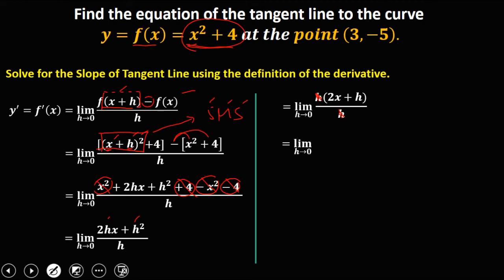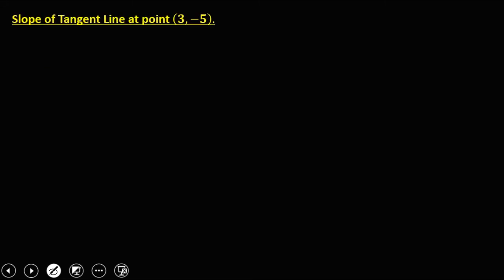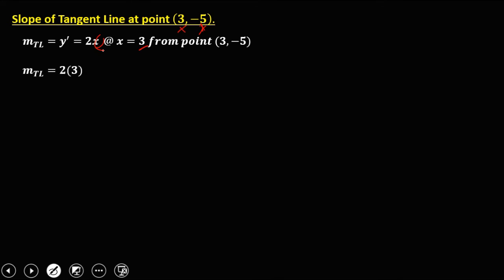Cancel the h. So the limit as h approaches 0 is 2x plus h. Now substitute 0 for h: we have 2x plus 0, so therefore the derivative is equal to 2x. After getting the derivative, solve for the slope of the tangent line at point (3, negative 5). Since the slope equals y prime equals 2x, and x equals 3, the slope is 2 times 3, which equals 6.